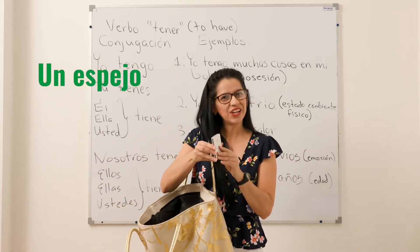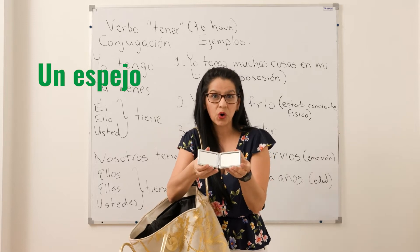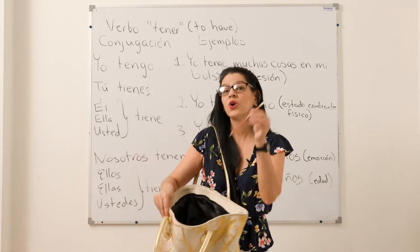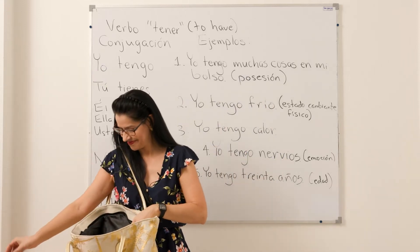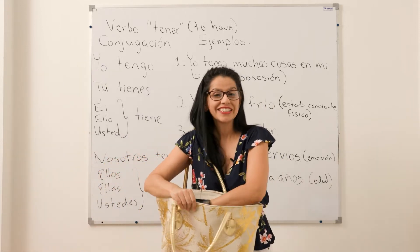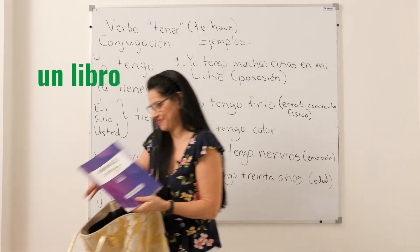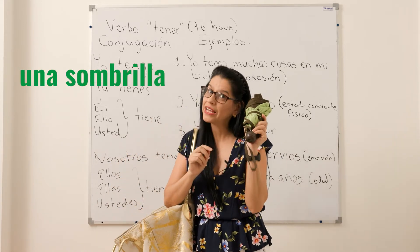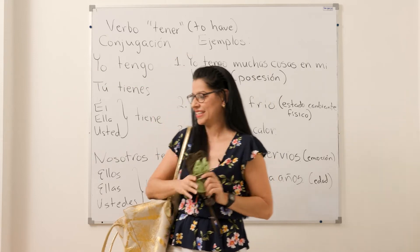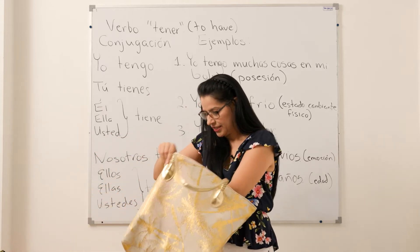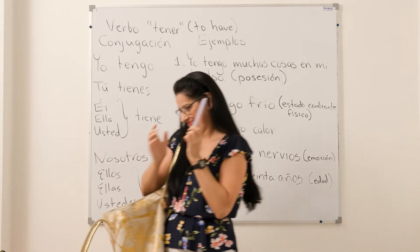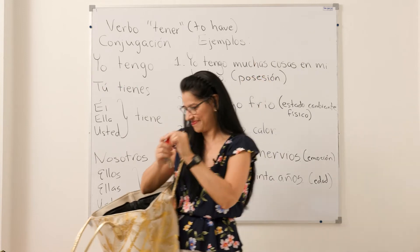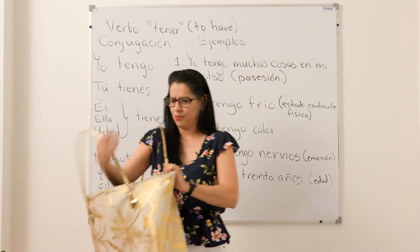Yo tengo un espejo pequeño. También tengo un lápiz. En mi bolso, también tengo un libro. También tengo una sombrilla — muy importante. Si llueve, necesito mi sombrilla. También tengo mi teléfono, y mis llaves. Muchas cosas en mi bolso.